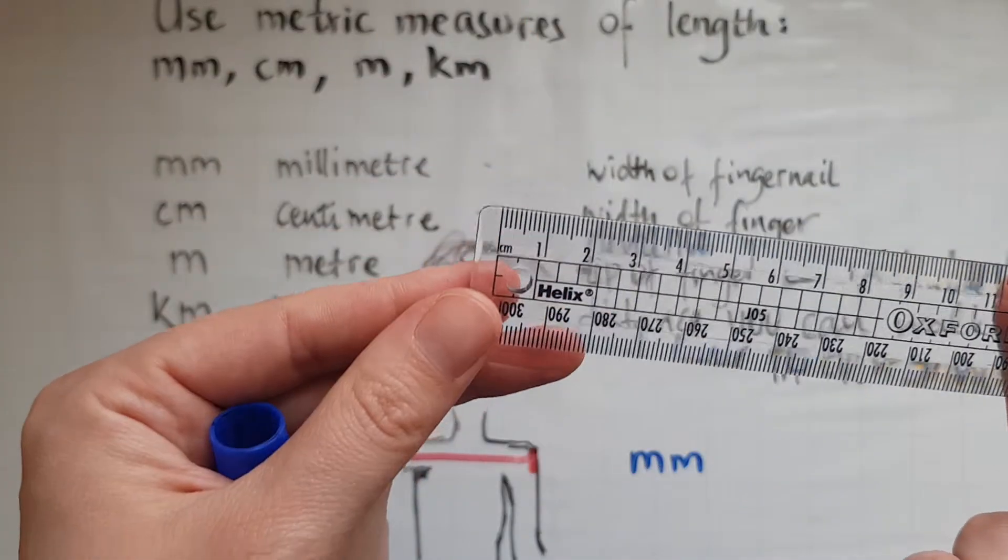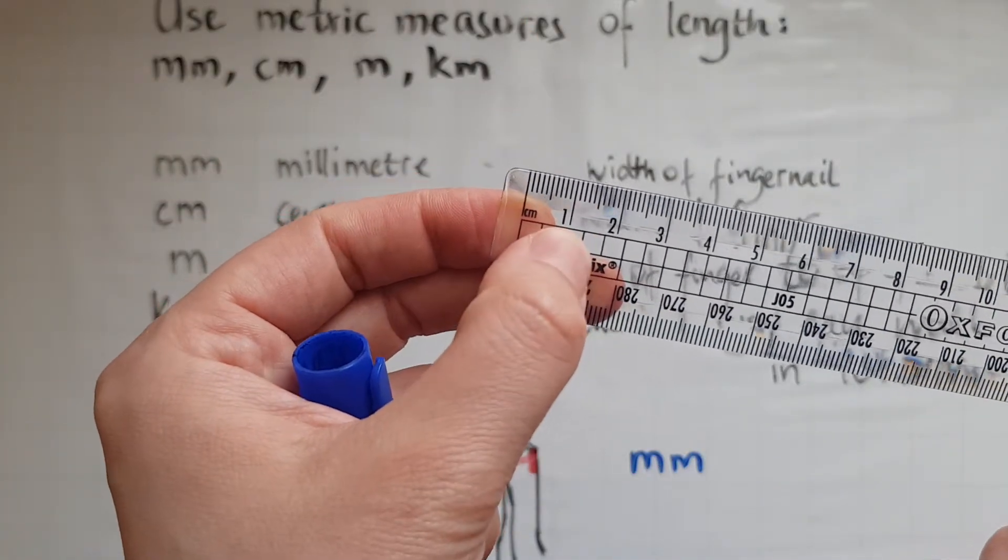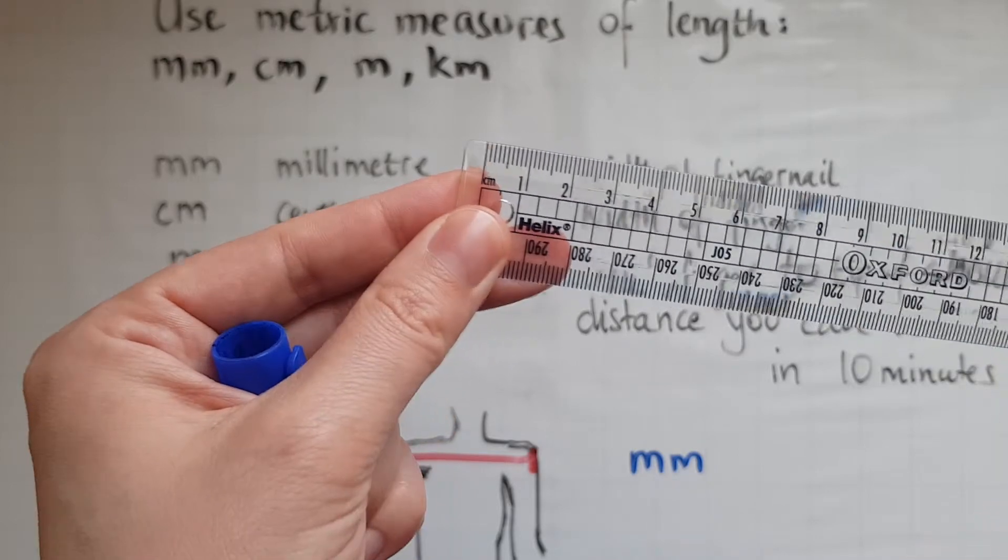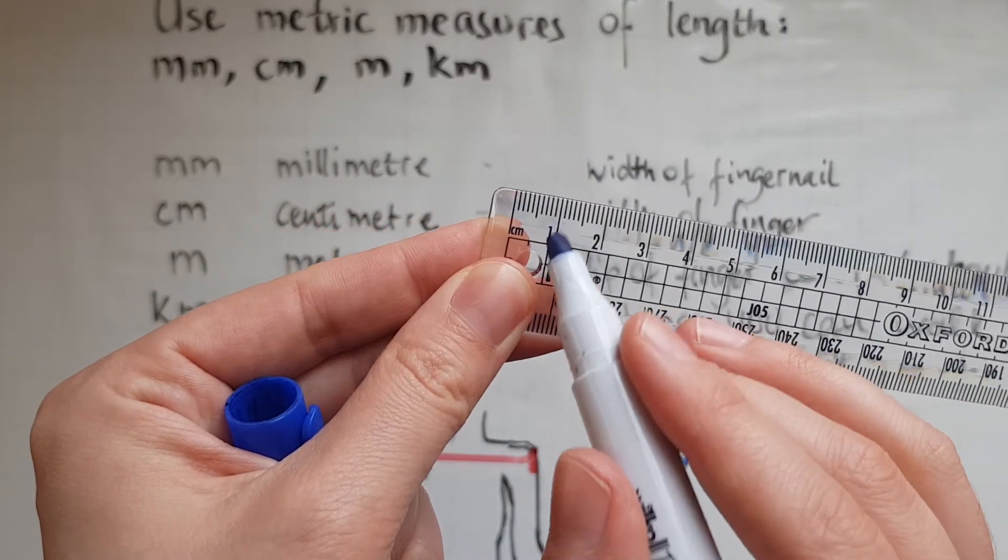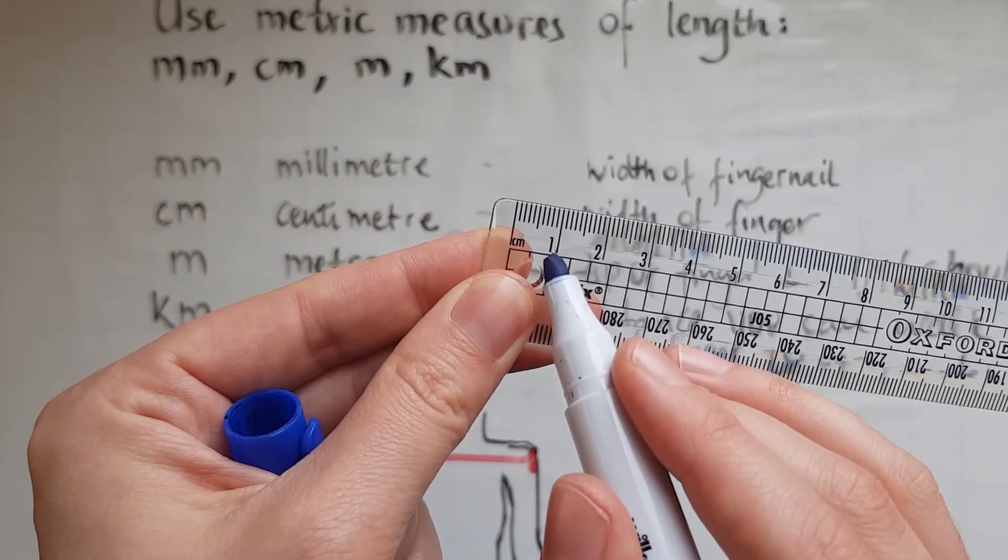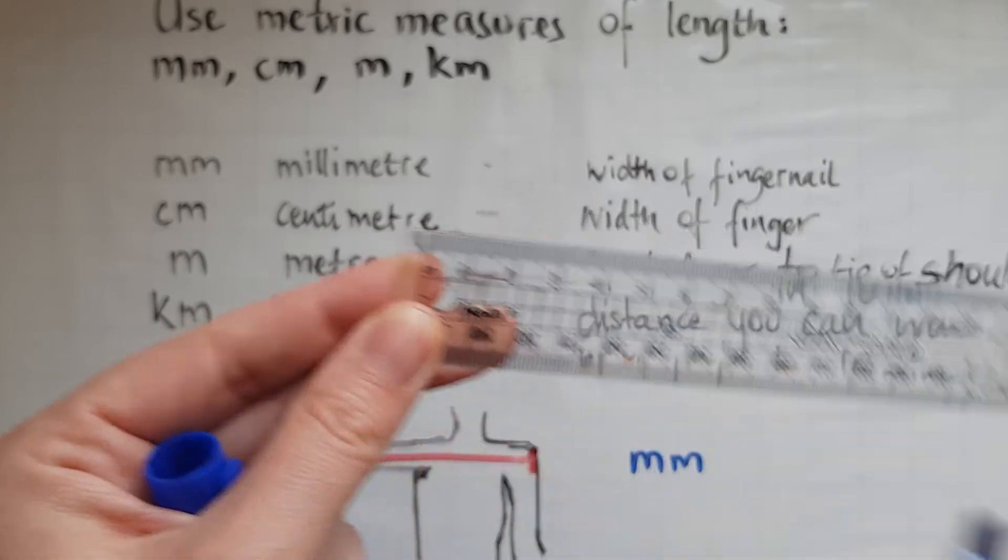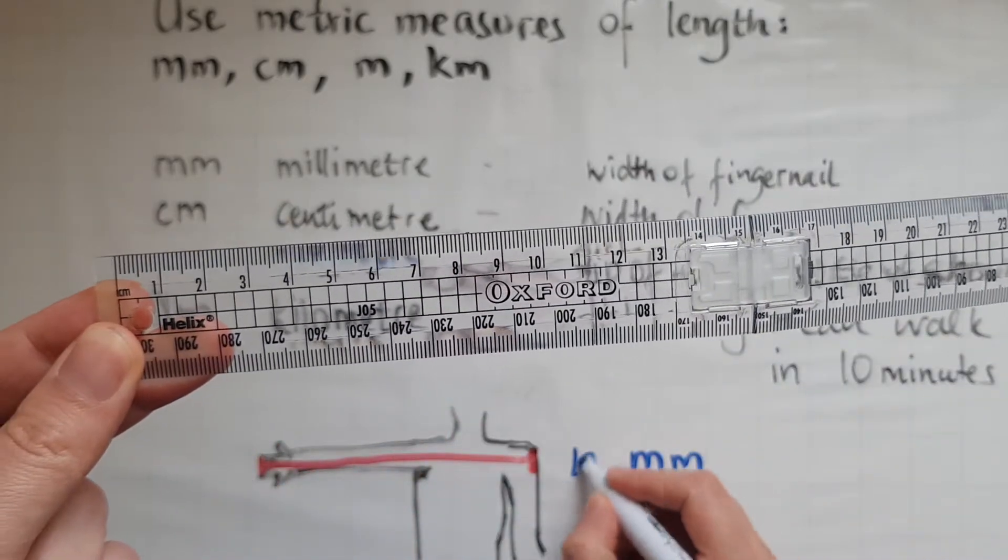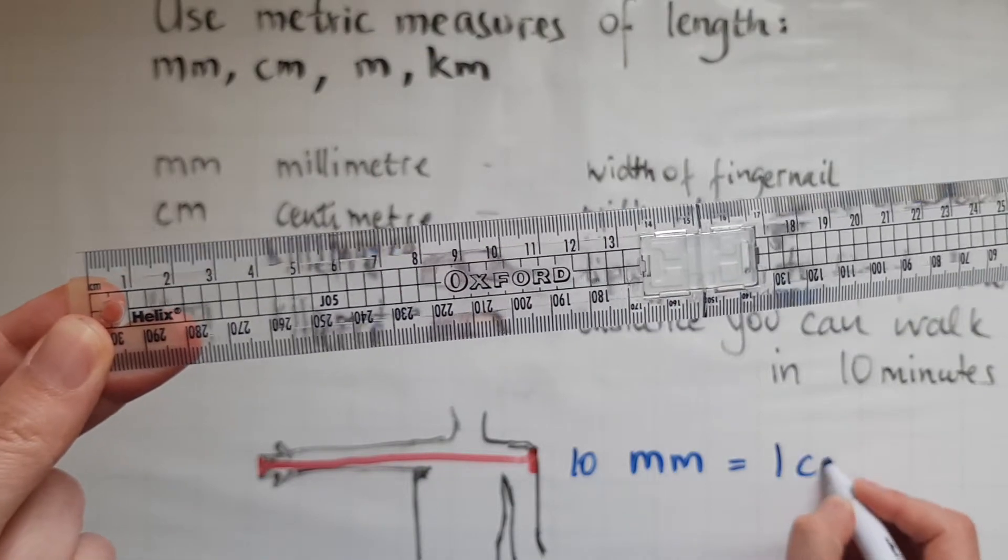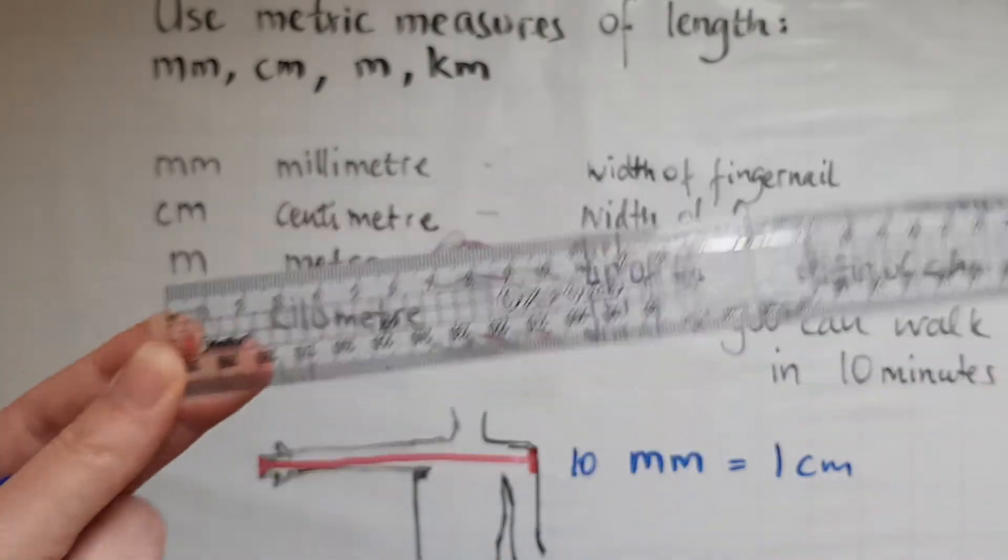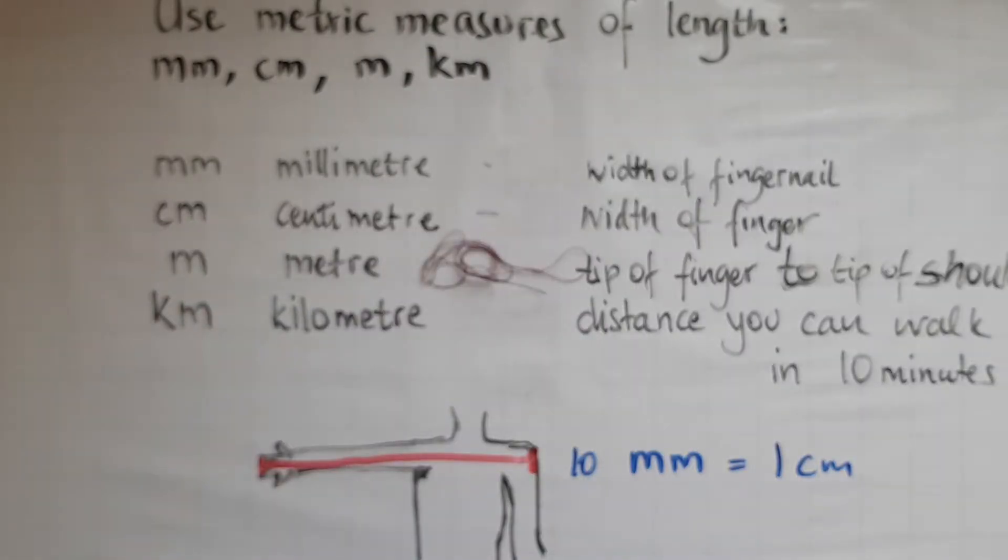And if I turn this around that kind of proves what I've just said, because as you can see the long line now marks one centimeter. So ten millimeters are equal to one centimeter and a ruler can help you with that.